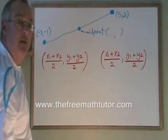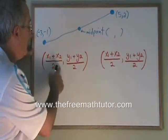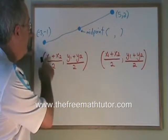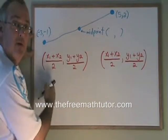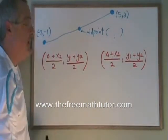We want to know what are the x and y coordinates of the midpoint, and we will use this formula to find it. The formula says x1 plus x2 over 2, y1 plus y2 over 2.